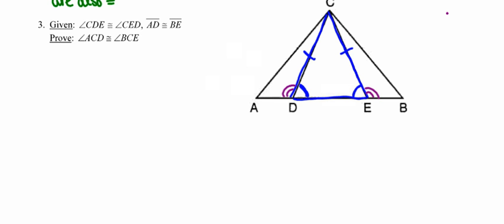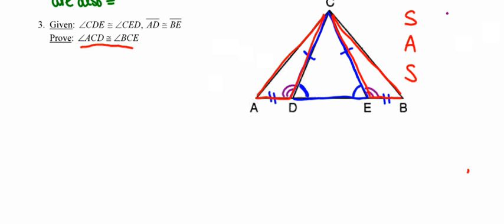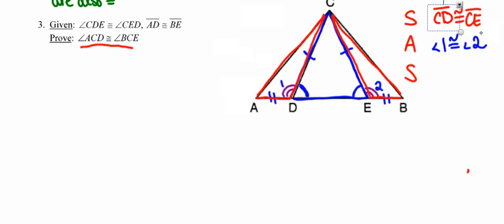The other given is that segments AD and BE are congruent, so I'll mark those too. What we're trying to prove is that angle ACD is congruent to angle BCE. If I can prove those red triangles congruent, I can use CPCTC to get the angles congruent. I can prove those red triangles congruent by side-angle-side. My plan is to use side CD≅CE, the supplementary angles 1 and 2 being congruent, and side AD≅EB.